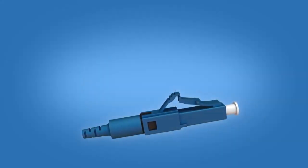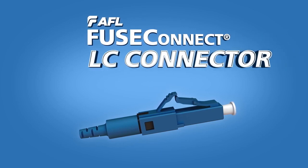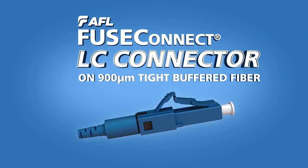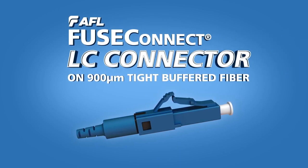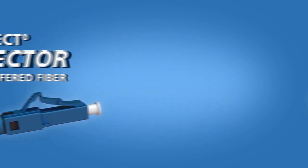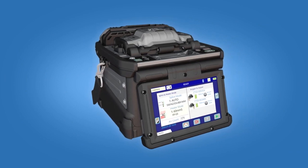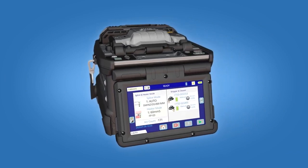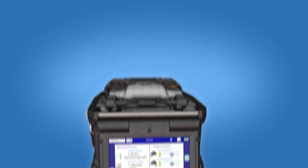This installation video is applicable for AFL's SpliceOn FuseConnect LC connectors on 900-micron tight-buffered fiber. These step-by-step instructions demonstrate the termination of the connector using a Fuji Cora 90S Plus Fusion Splicer.